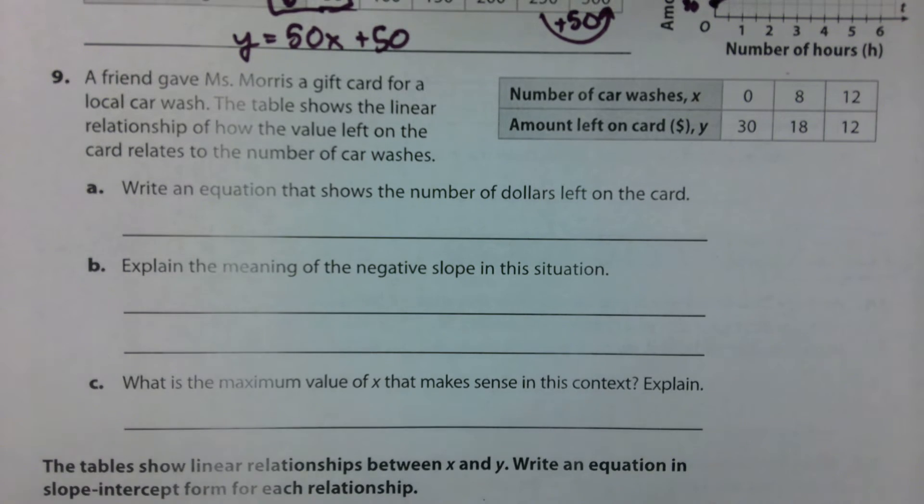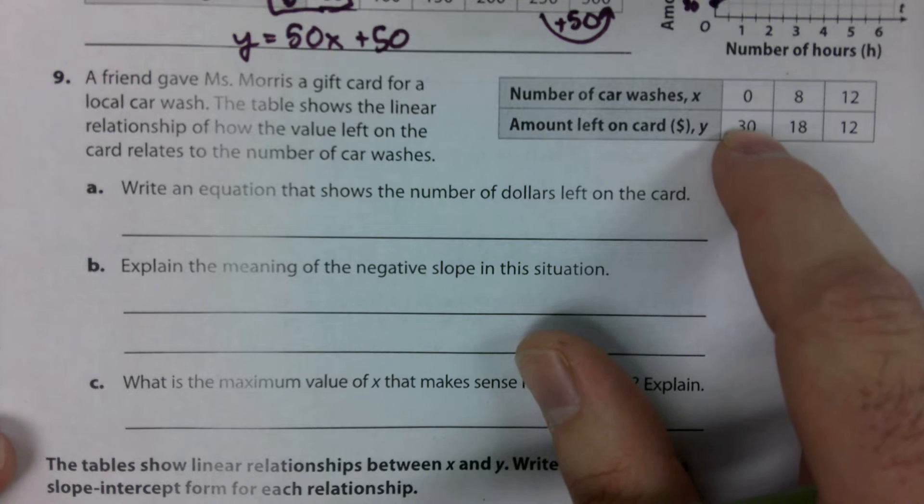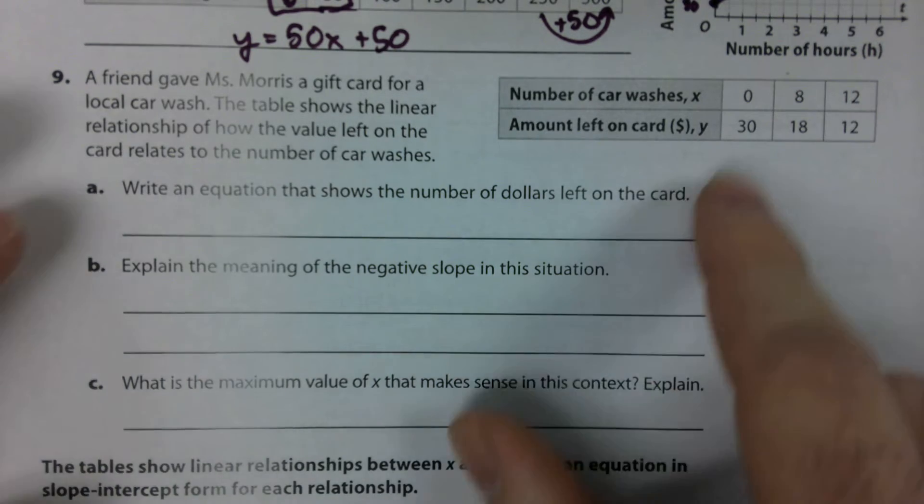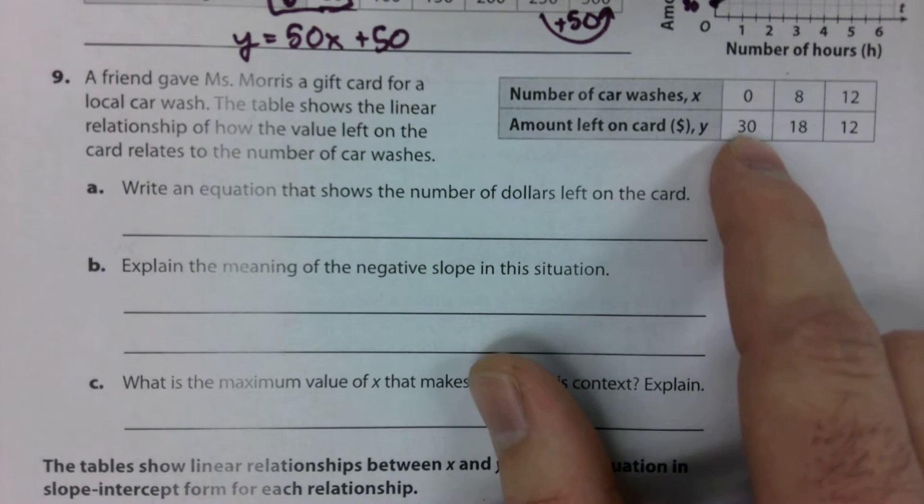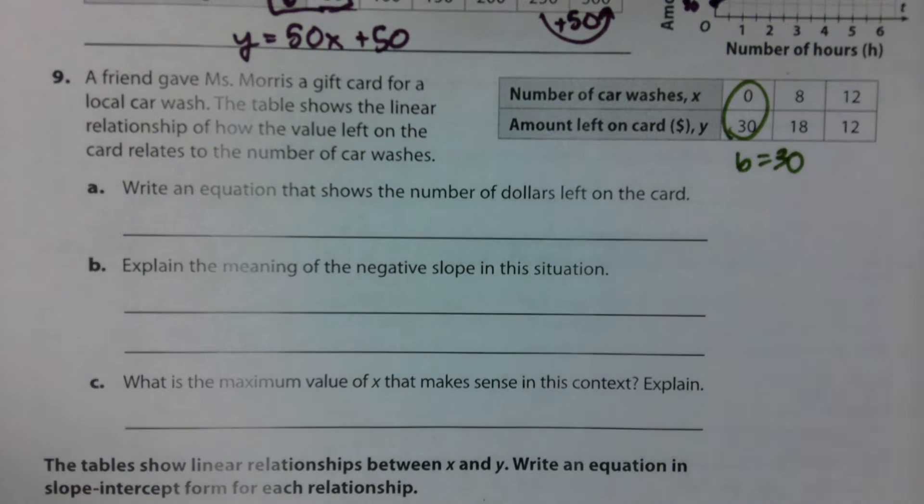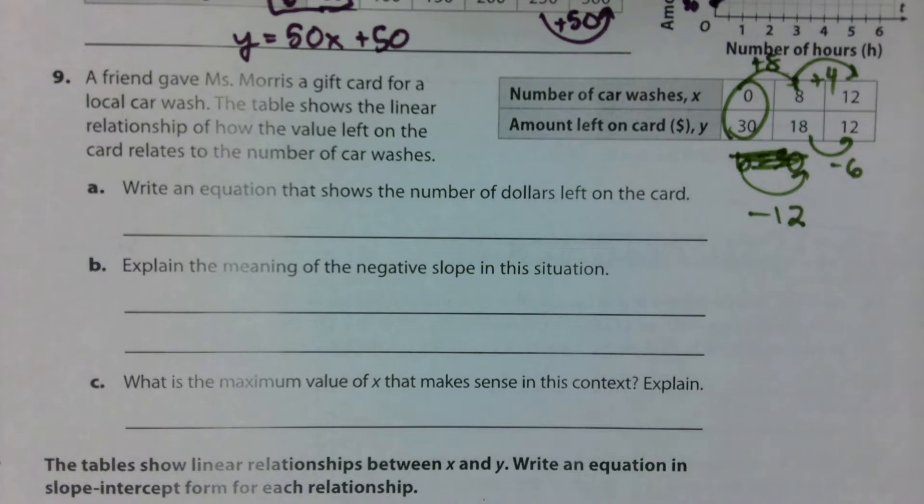The first thing we've got to do is write an equation that shows the number of dollars left on the card. Writing an equation here is the easiest part. The tricky part is explaining what those numbers mean. Do we see a B value on this table? I see an X of zero, so our B value must be 30. When we're talking about word problems, think back to our warm-up. What does the B value represent? The initial value, which is our starting point. At the starting point of getting this card, there's $30 on it. Let's do our change in Y over our change in X. From 18 to 12, that's minus 6, and from 8 to 12, that's plus 4.